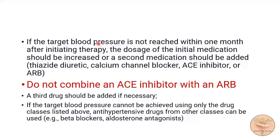If we start an individual on a drug but do not reach the target blood pressure within one month, then the dose of the initial medication should be increased or a second medication should be added — such as a thiazide diuretic, calcium channel blocker, ACE inhibitor, or ARB. One important point: do not combine an ACE inhibitor with an angiotensin receptor blocker.